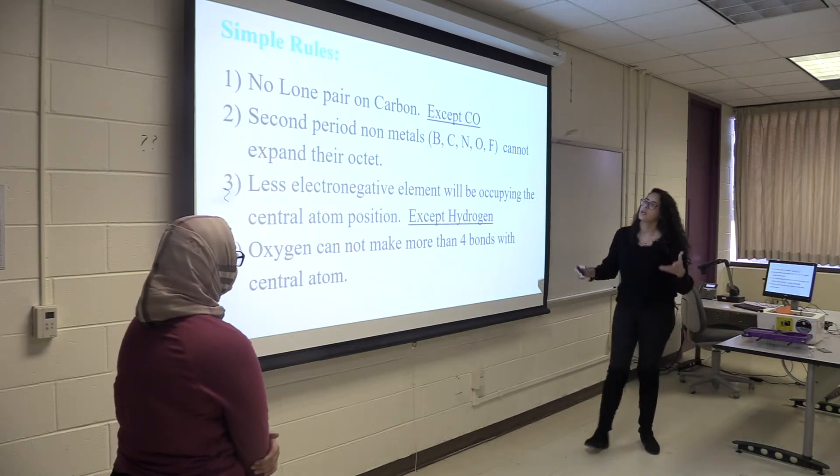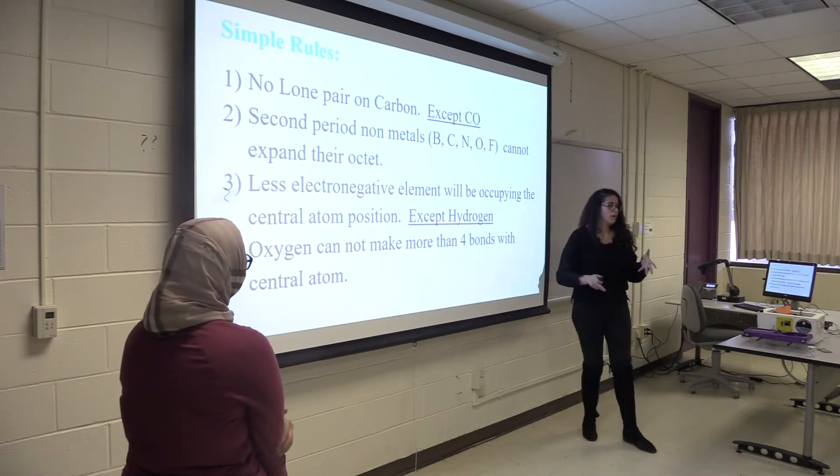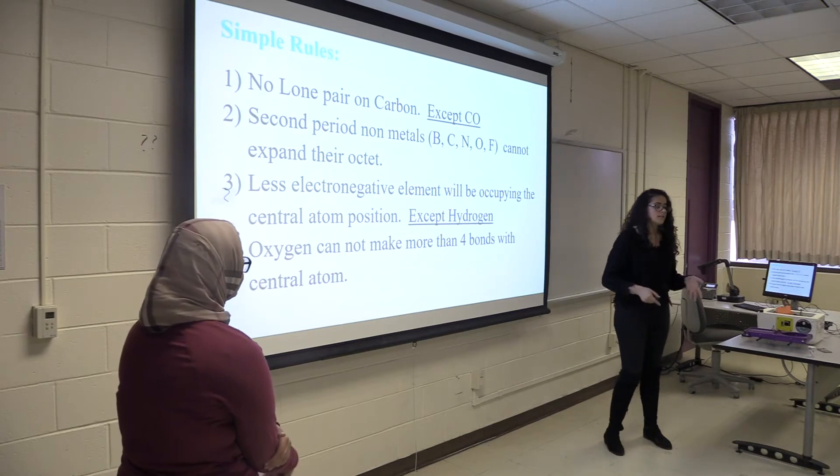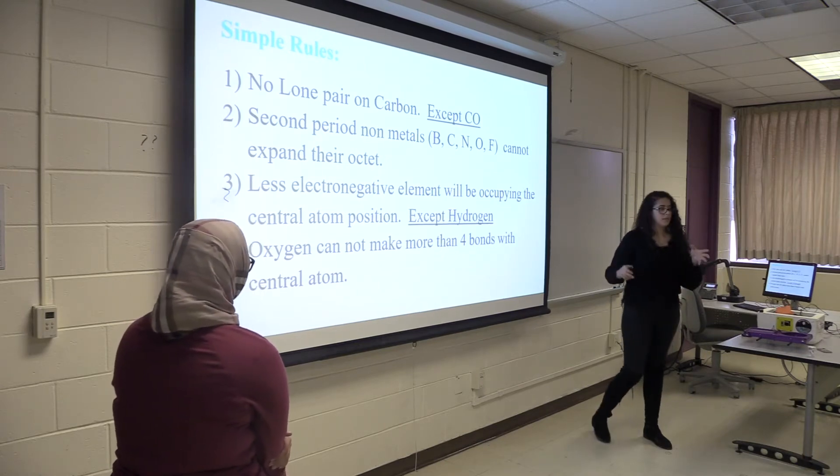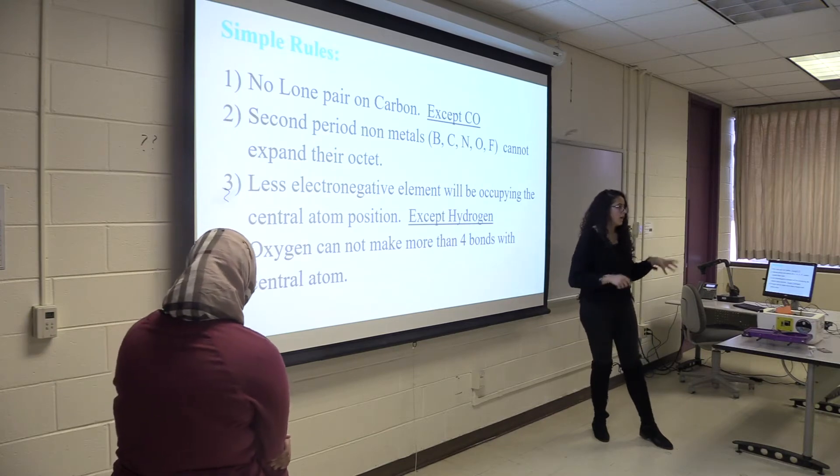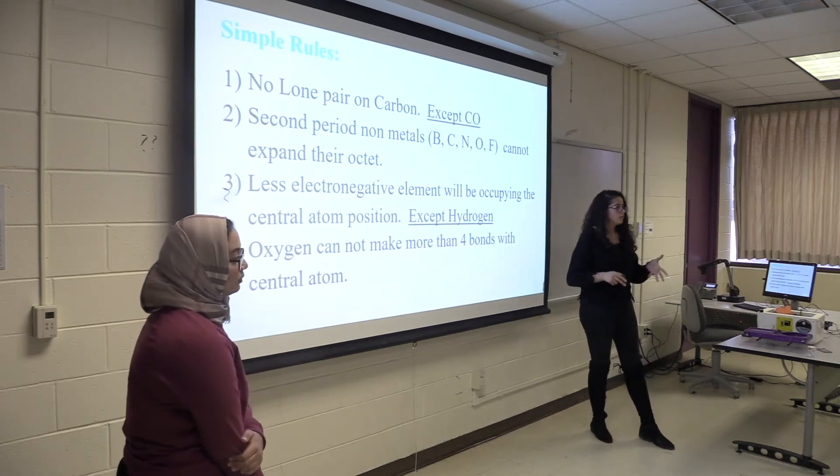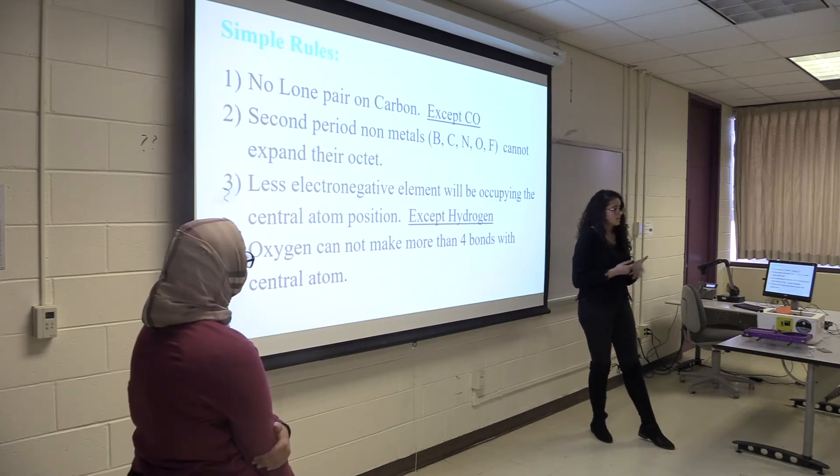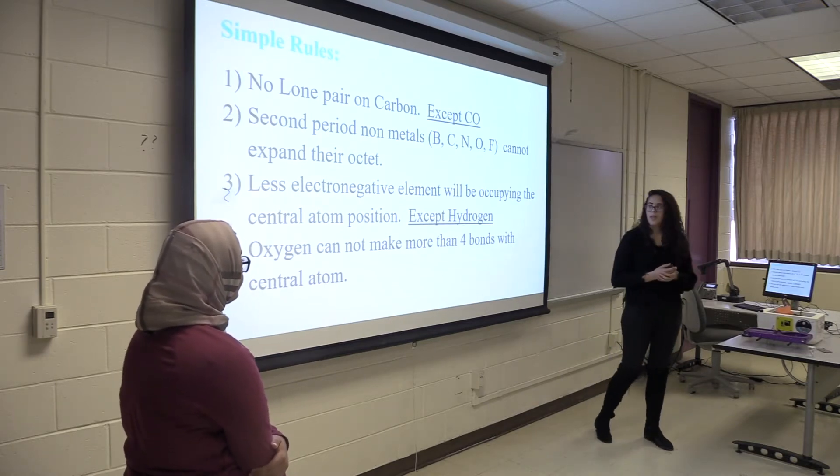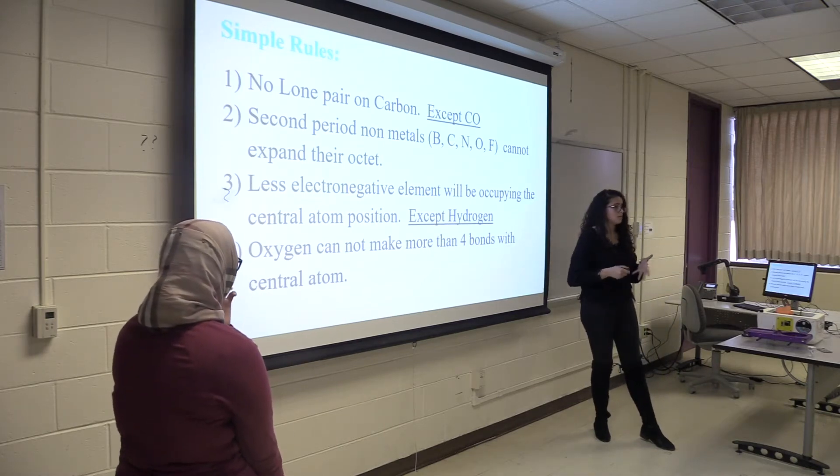So the simple rules that go along with this is that you can't have any lone pairs on carbon except for carbon monoxide, second period non-metals can't expand their octet because of the octet rule, and the least electronegative element will occupy the central atom position except for hydrogen, and lastly oxygen cannot make more than four bonds with the central atom.